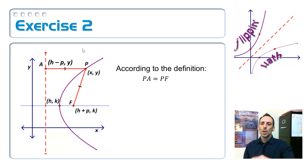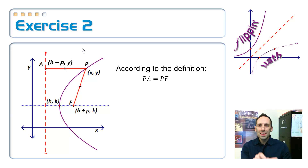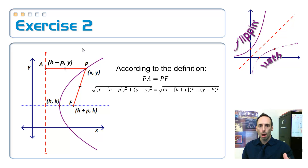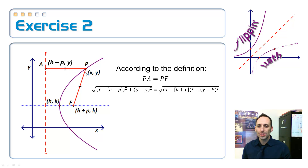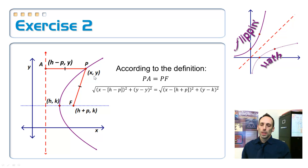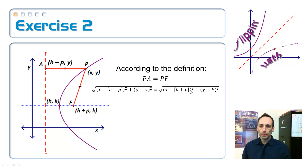According to the definition, the distance from P to A is exactly equal to P to F. So I'm going to use the distance formula on PA, use the distance formula again on PF, and set them equal to each other. So the distance from P to A: I subtract my x's, so it's x minus the quantity H minus P, because that's the x-coordinate of point A, squared. Plus the difference of the two y's, y minus y — that's just going to be zero. On the other side, for P to F, it's x minus the quantity H plus P, squared, plus y minus k, squared.